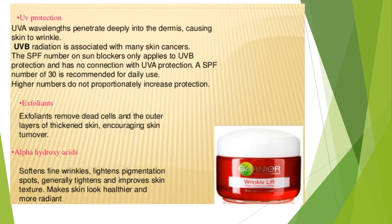What is UV protection? UV-A wavelengths penetrate deeply into the dermis, causing the skin to wrinkle. UV-B radiation is associated with many skin cancers. The SPF number of a sun blocker only applies to UV-B protection and has no connection with UV-A protection. An SPF number of 30 is recommended for daily use; higher numbers do not proportionately increase protection. UV protection agents — sunscreen preparations — are used to prevent UV damage, as UV wavelengths can deeply penetrate the dermis layer and cause wrinkles.